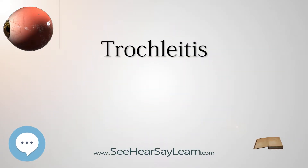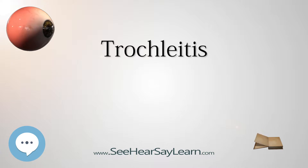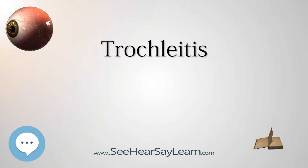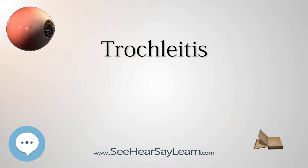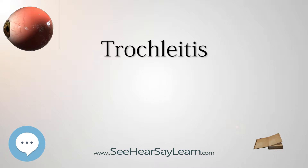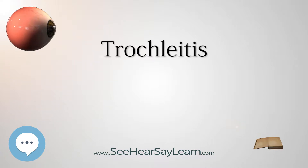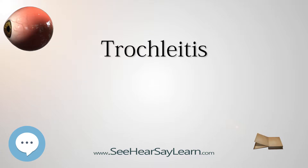Trochlitis is inflammation of the superior oblique tendon trochlea apparatus, characterized by localized swelling, tenderness, and severe pain. This condition is an uncommon but treatable cause of periorbital pain. The trochlea is a ring-like apparatus of cartilage through which passes the tendon of the superior oblique muscle. It is located in the superior nasal orbit and functions as a pulley.